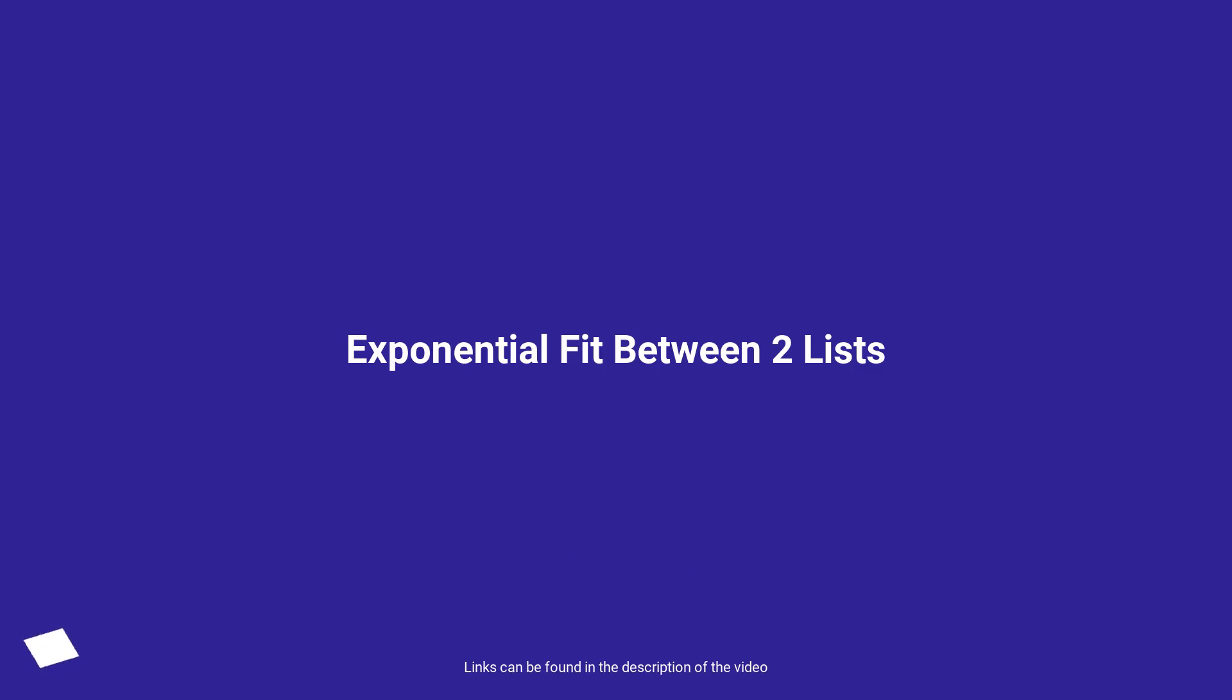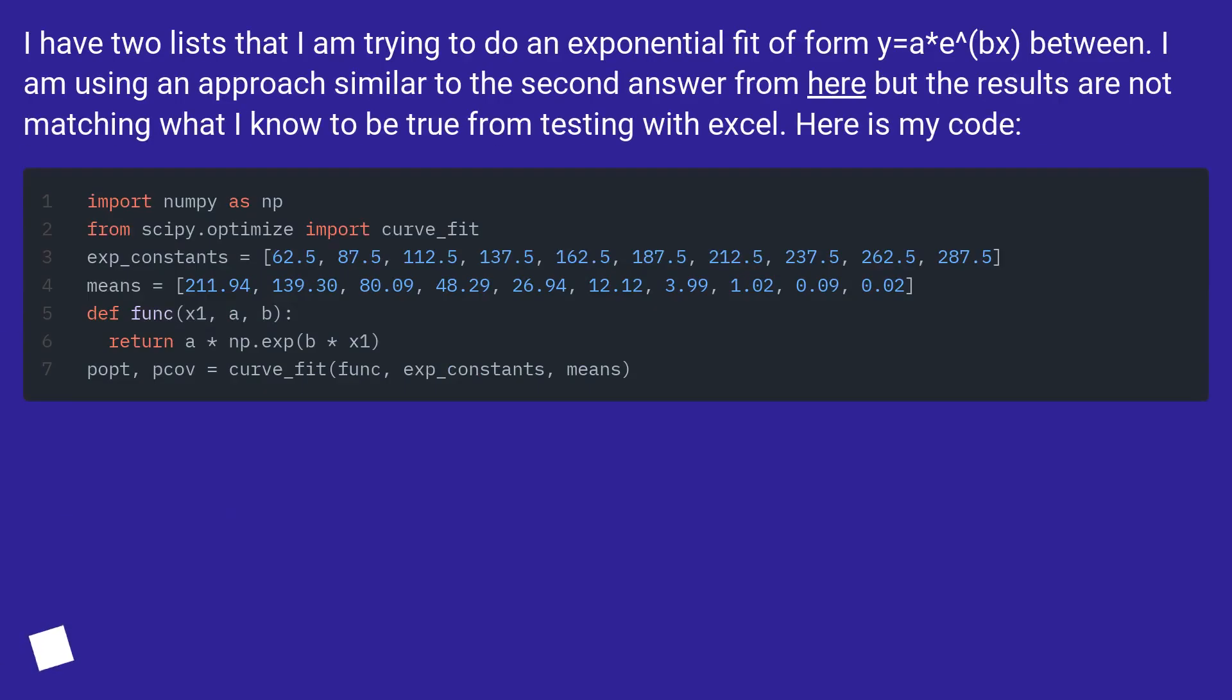Exponential fit between two lists. I have two lists that I am trying to do an exponential fit of form y=ae^(bx) between. I am using an approach similar to the second answer from here but the results are not matching what I know to be true from testing with Excel. Here is my code.